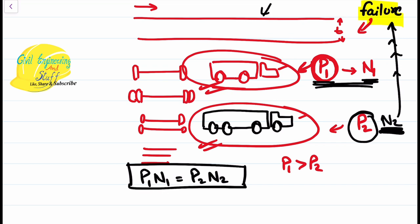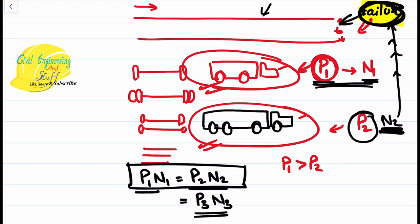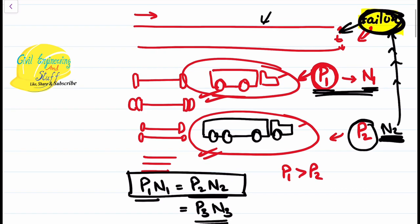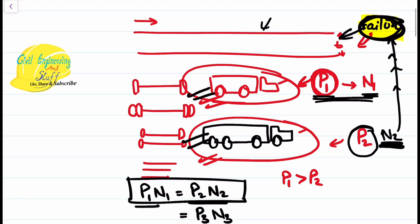Likewise, if there is another vehicle of weight P3, it will take N3 number of repetitions to bring the road to complete failure. So different vehicles will take different numbers of repetitions to make a specific road reach complete failure.